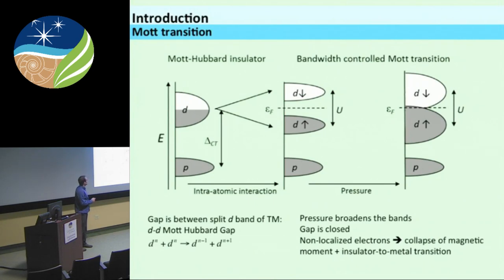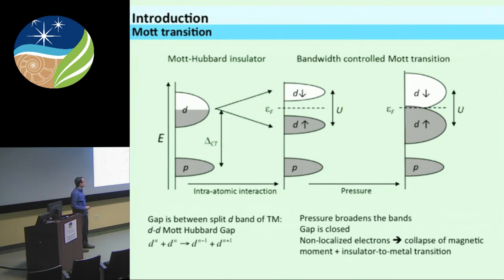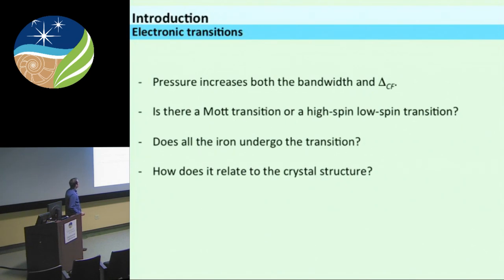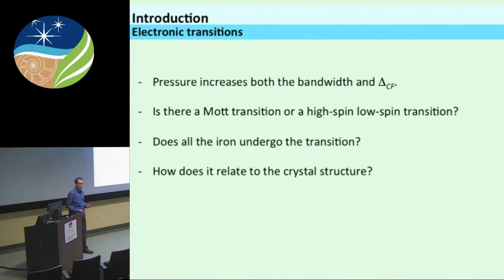For the Mott transition: we see the p-level of oxygen and the d-state of the transition metal. The intra-atomic interaction splits the d-level into two levels — one completely filled, one completely empty — with a gap U. When we apply pressure, we broaden these two bands and at some point they overlap, so electrons are no longer localized. We have a collapse of magnetic moment and an insulator-to-metal transition — that, in most basic terms, is a Mott transition. Pressure can increase both the bandwidth and the crystal field, so we can have either a high-spin to low-spin transition or a Mott transition.